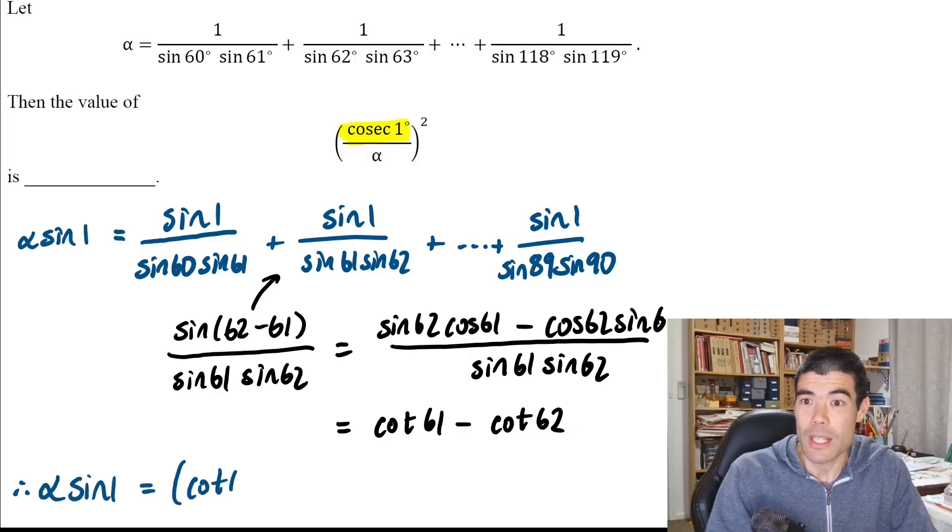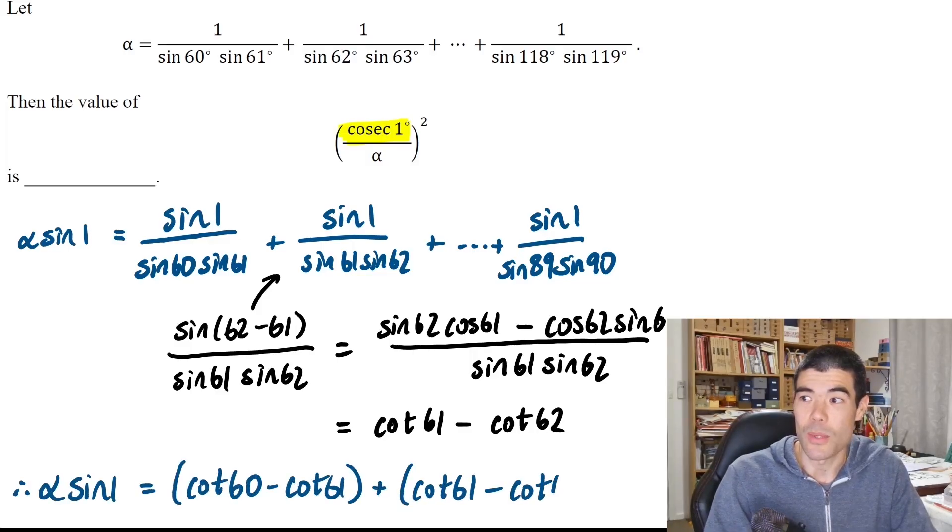That's great because we can do a similar trick for all the fractions in the sequence, and we get a really nice telescoping sequence: cot 60 minus cot 61 plus cot 61 minus cot 62 plus cot 62, etc. Most of those terms are going to cancel out.